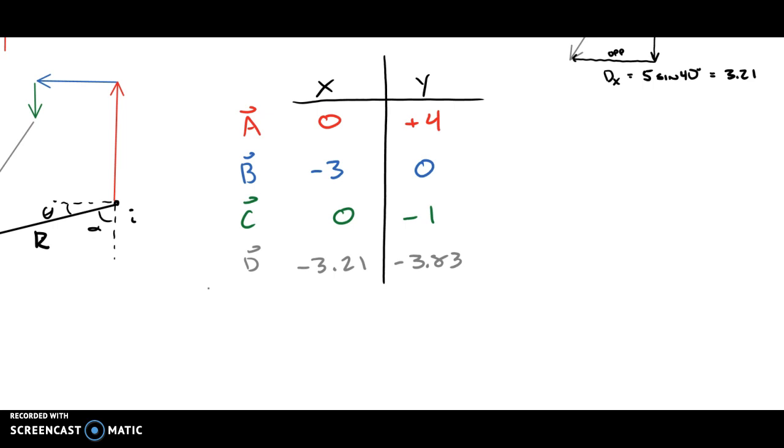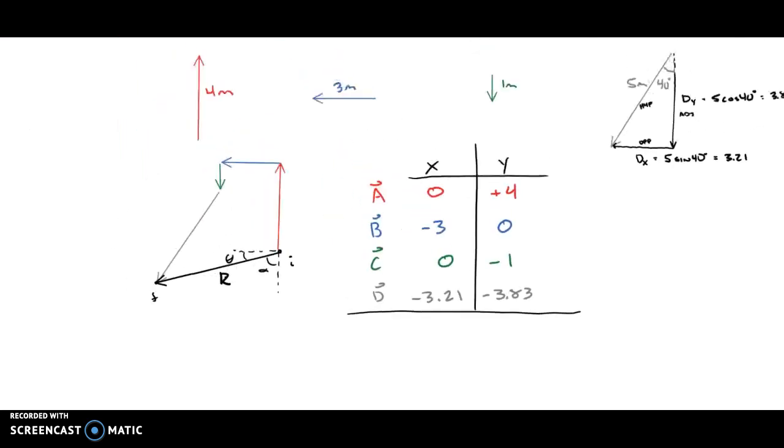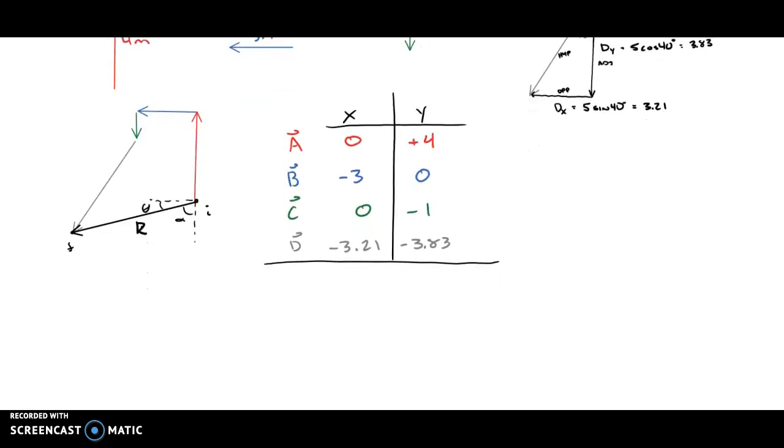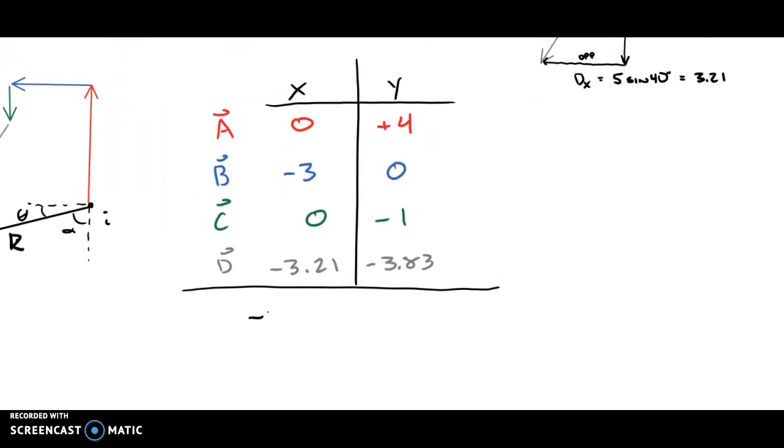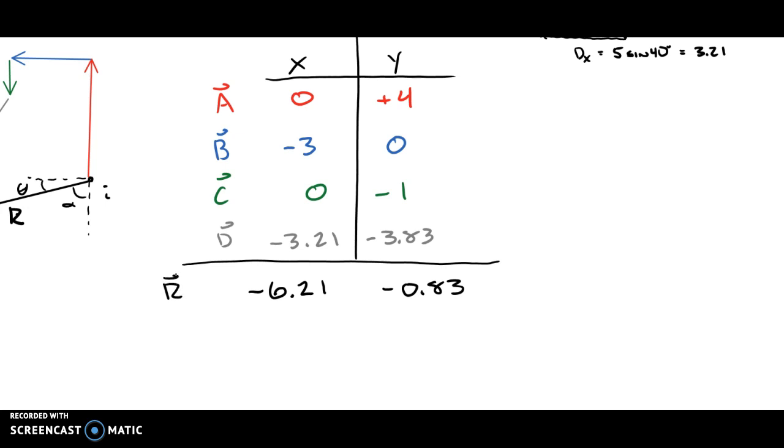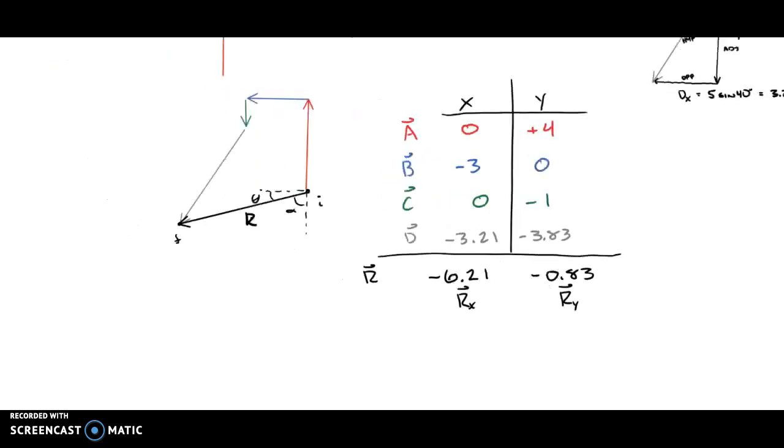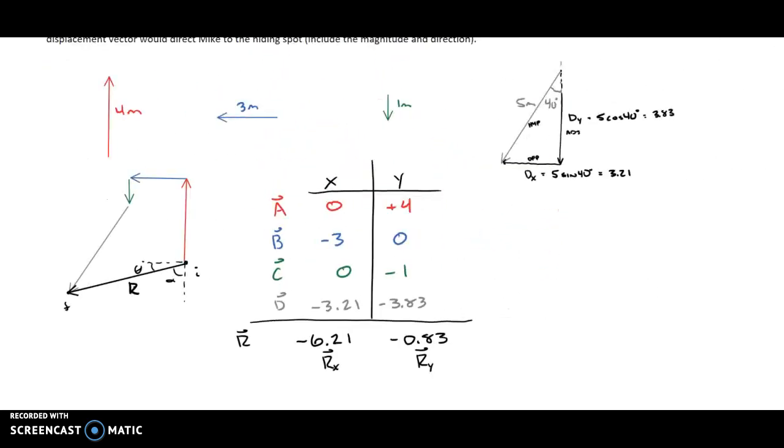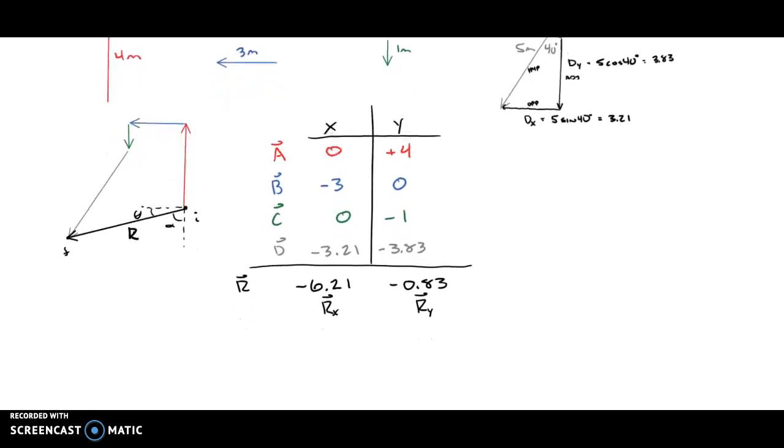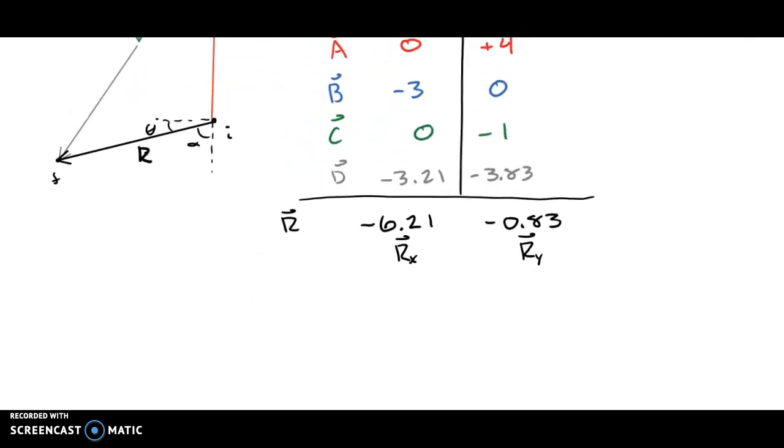So now we have all four vectors in the table. And since the x direction, we can add everything up, they're all organized that way. So I'm going to add all my x components together. And I'm going to get a total x component of negative 6.21 and a total y component of negative 0.83 if I add that all up. And this is for my resultant, R. And negative 6.21 would be the x component of the resultant. And this would be the y component of the resultant. So from this point, now I've simplified all these motions, A, B, C, and D, into two steps, one in the x, one in the y, that would get us to a resultant final position.